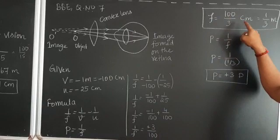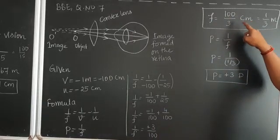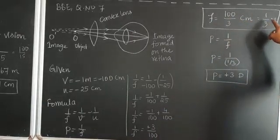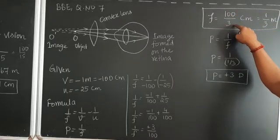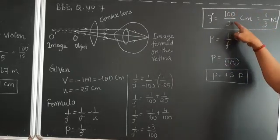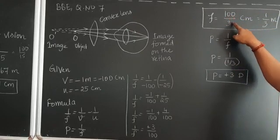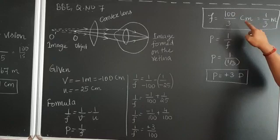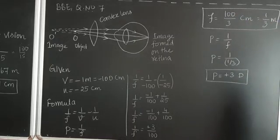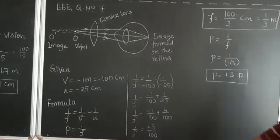F is equal to 100 by 3 centimeter and if you are converting into meter we can divide this value by 100. If I divide this in the sense here the 100 will come. 100 and 100 will cancel and it will gives 1 by 3 meter and we need to calculate the power also here.